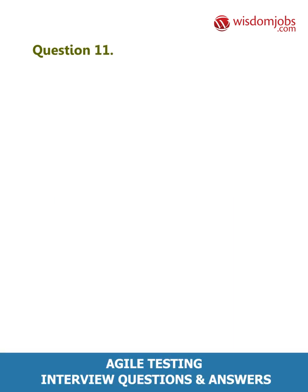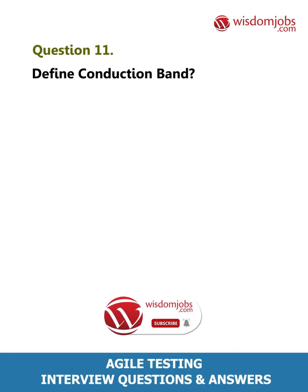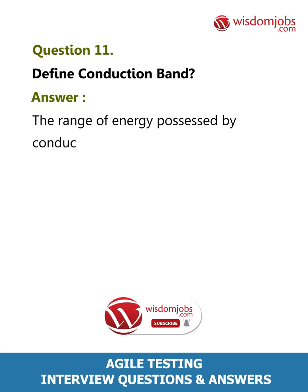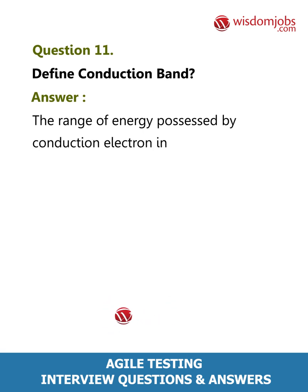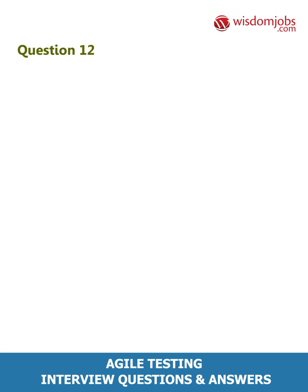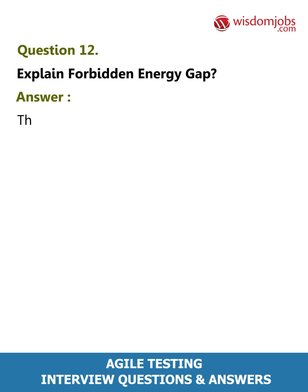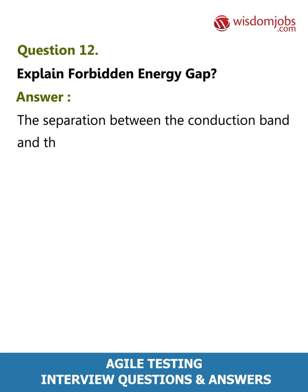Question 11: Define conduction band. Answer: The range of energy possessed by conduction electrons in an atom is called conduction band. Question 12: Explain forbidden energy gap. Answer: The separation between the conduction band and the valence band on the energy band diagram.